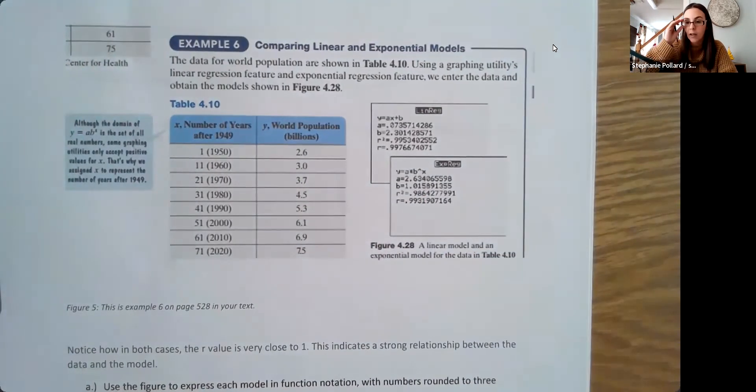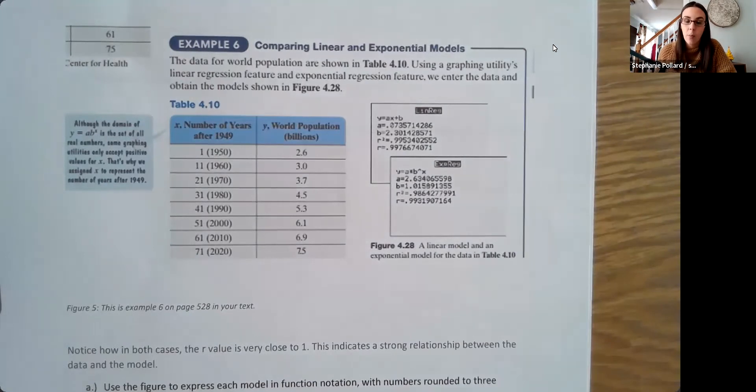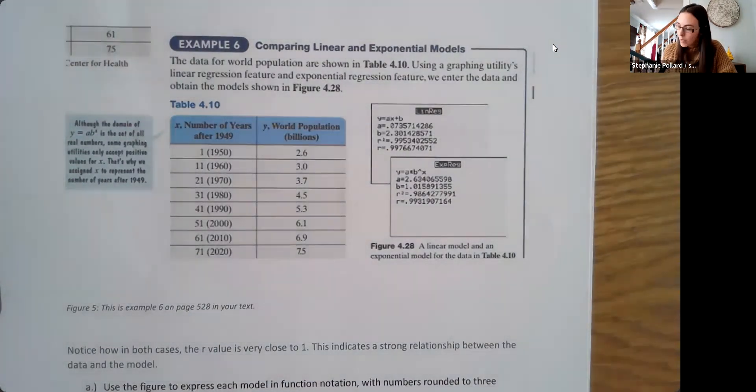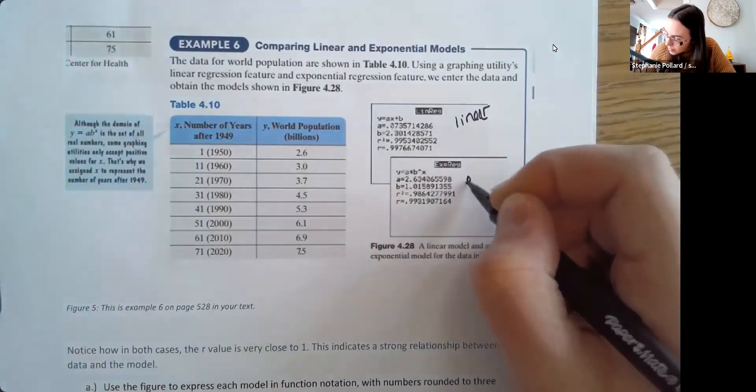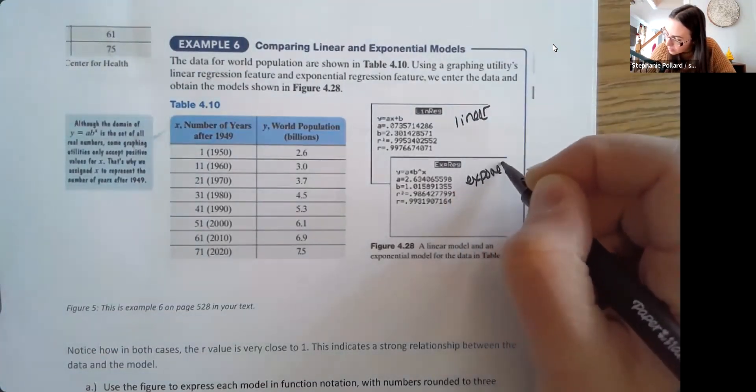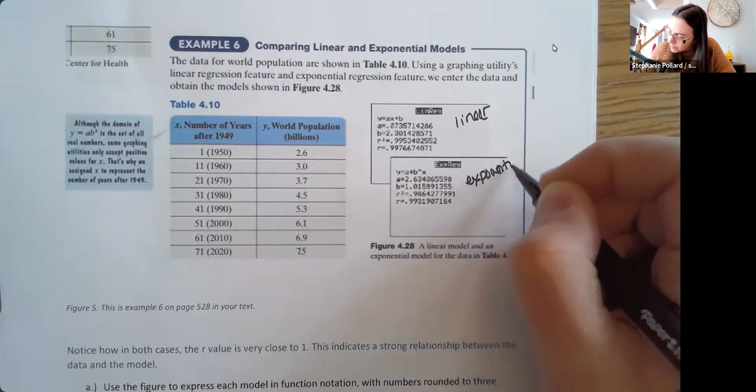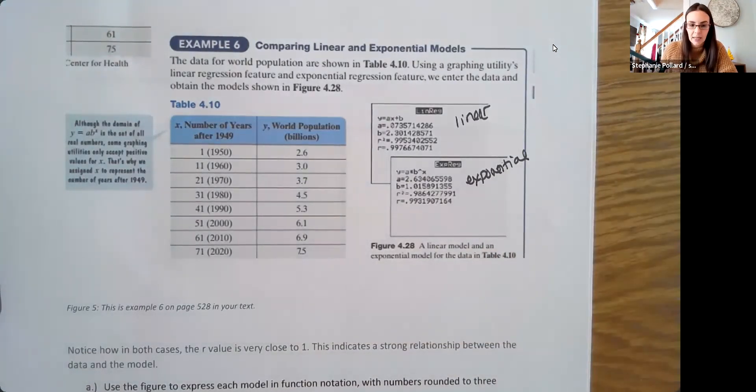So here is the output. So again, I'm not worried about you running it on your own. I'm just kind of letting you see what the output would look like here. So this is your linear model, and then this is your exponential model, which were the two that we said exponential that we were considering here to represent the data.